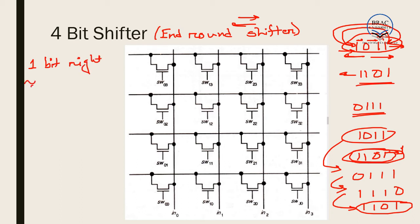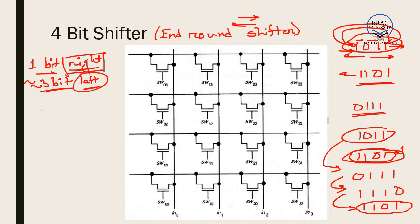Because of this equivalence, we do not need to design a separate right shifter and left shifter. We design a single right shifter. If we want to shift left by one bit, we simply shift three bits towards the right. If we want to shift left by two bits, we shift two bits towards the right. We always shift towards the right, but we get the result of left shift as well. This is the advantage of end-round shifters.